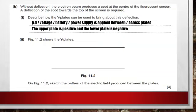Figure 11.2 shows the gamma plates. Sketch the pattern of the electric field produced between the plates. In these gamma plates, let us mark the upper plate positive and the lower plate negative. Then draw arrows pointing downwards or from positive to negative.